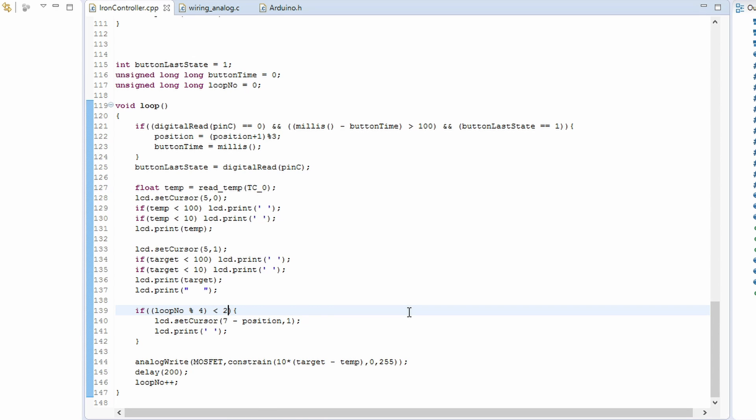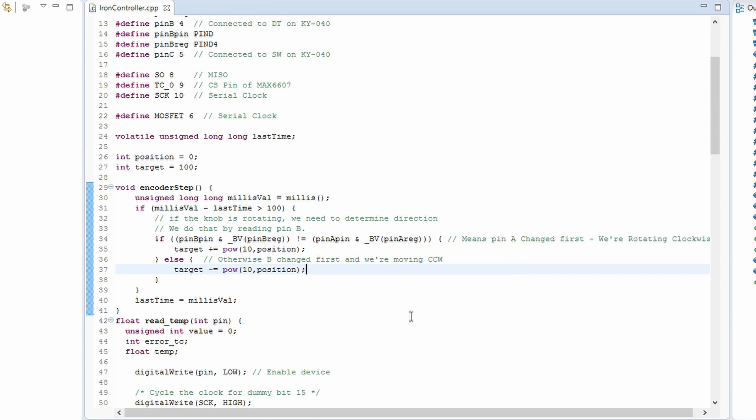Finally, we write some code to handle displaying the current and desired temperature on screen and changing it using the encoder.